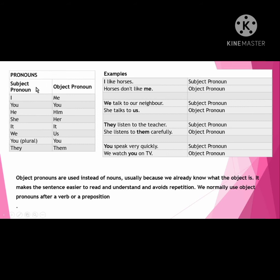Pronouns are classified as subjective pronouns and objective pronouns. The words such as I, you, he, she, it, we, you, they are called subjective pronouns. And words such as me, you, him, her, it, us, you, them are called objective pronouns.